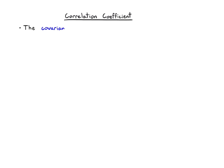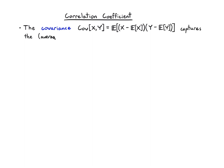We can now introduce the correlation coefficient. The covariance, which we write as just the average value of the product of x minus its mean and y minus its mean, captures the average linear relationship between x and y with their means removed — so x minus E(x) and y minus E(y).